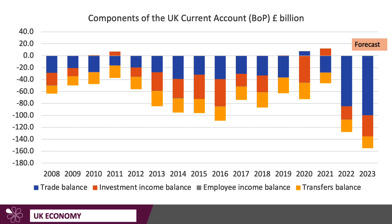Here's how the balance of payments is constructed on the current account. There's the trade balance in blue — that's the net balance of trading goods and services. Investment income balance: the net flows of interest, profits and dividends from external assets and liabilities. Employee income balance — it's such a small net balance, just a few hundred million pounds either side, it doesn't actually appear on the chart. And then transfers in yellow, which includes things like overseas aid and the legacy effects of the UK's contributions to international organisations including the European Union and the United Nations. Typically, transfers are always negative, investment income balance has become negative as well in recent times, and the trade gap has widened.